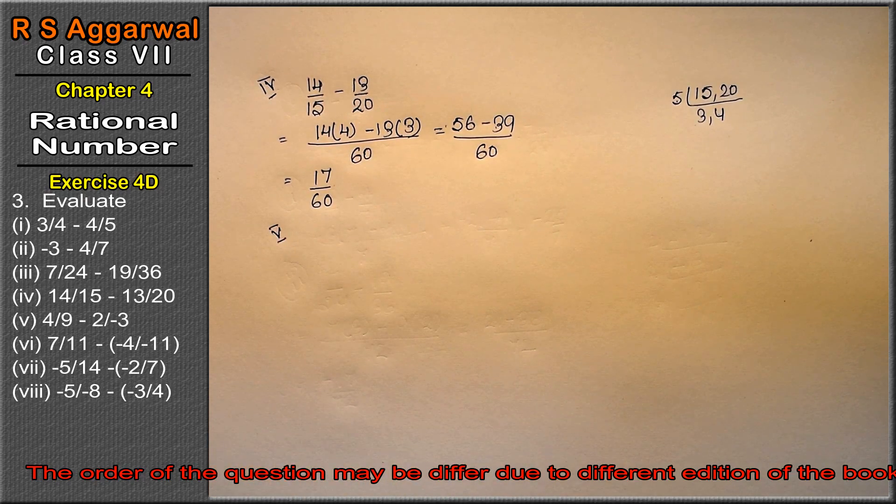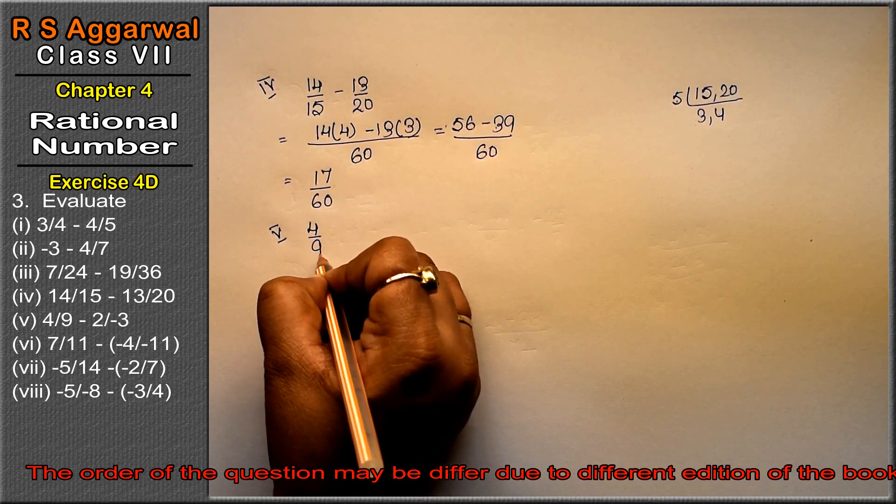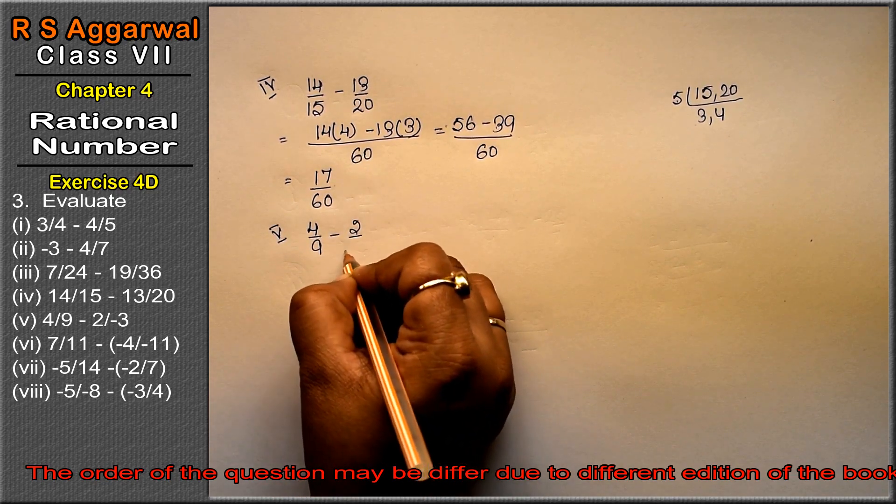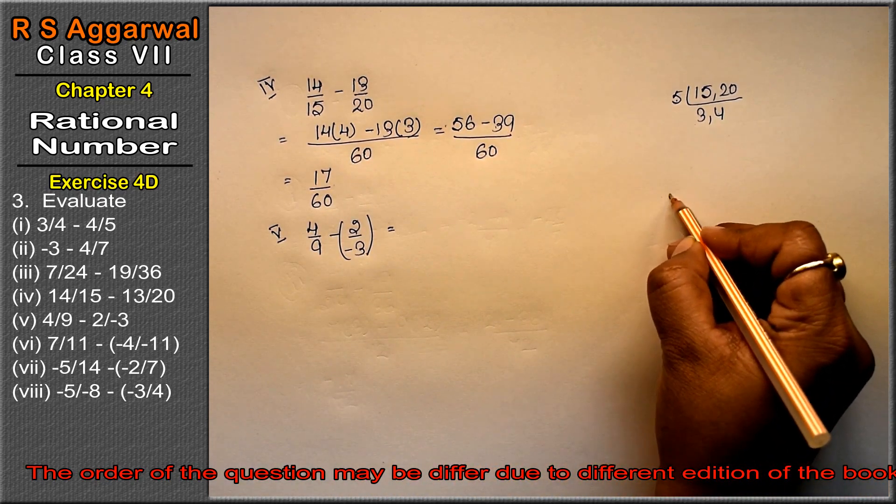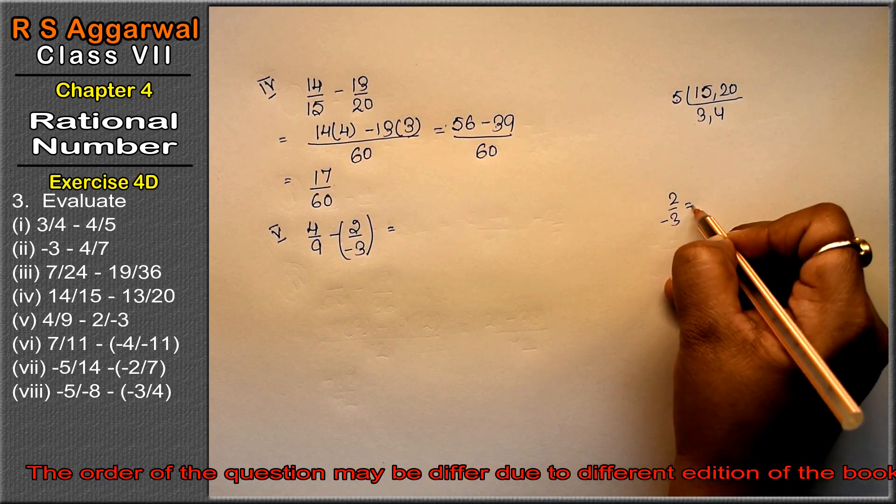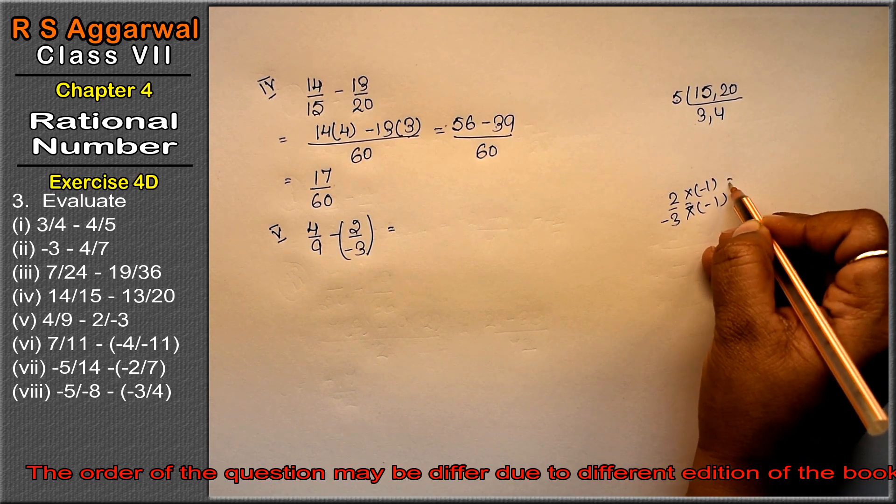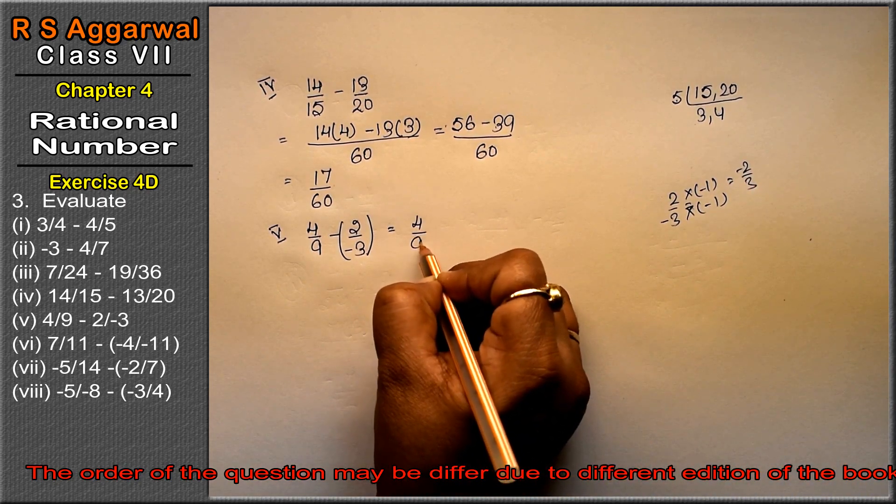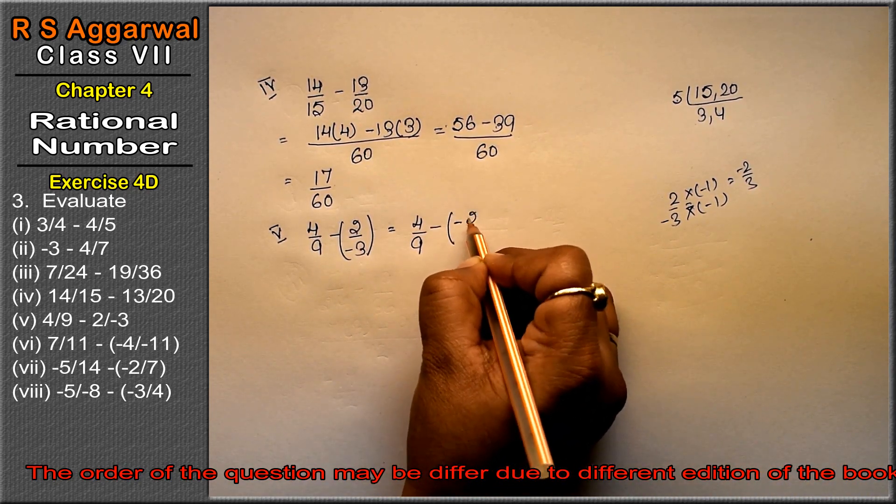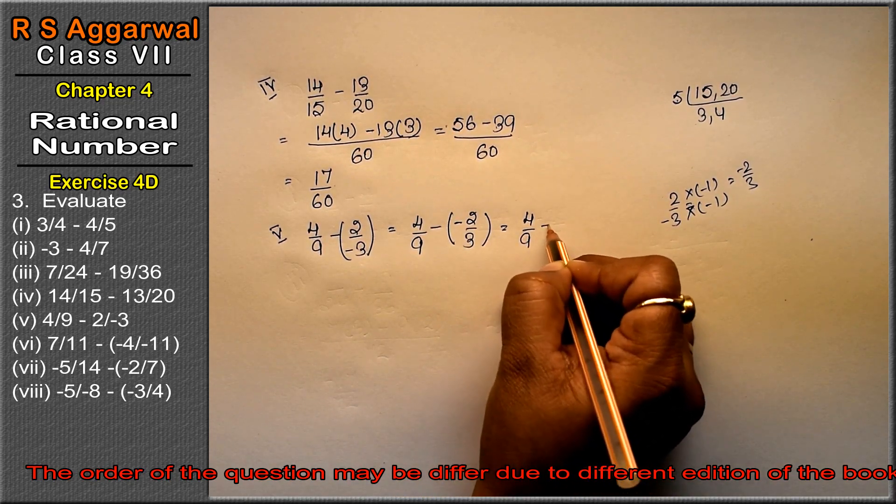Fifth part is 4 upon 9 minus 2 upon negative 3. How can we read this? 2 upon minus 3, we multiply by minus 1, giving minus 2 upon 3. So this is 4 upon 9 minus minus 2 upon 3. This becomes 4 upon 9 plus 2 upon 3.